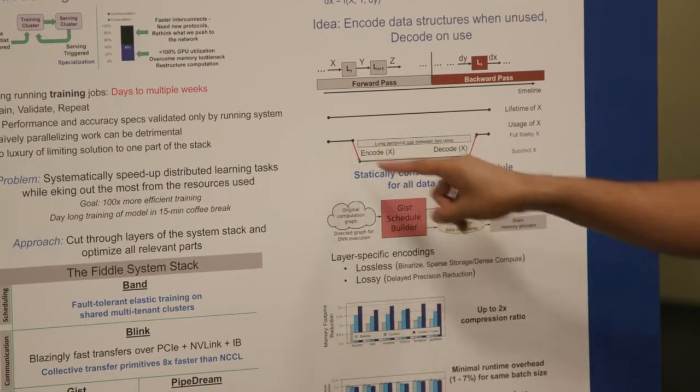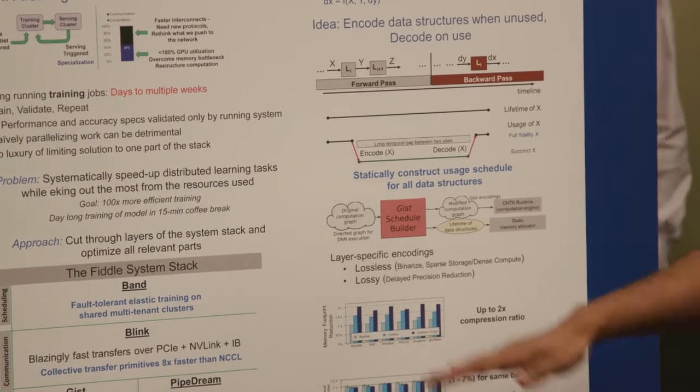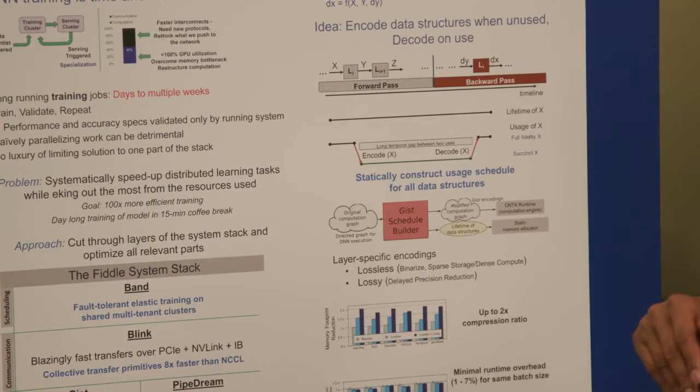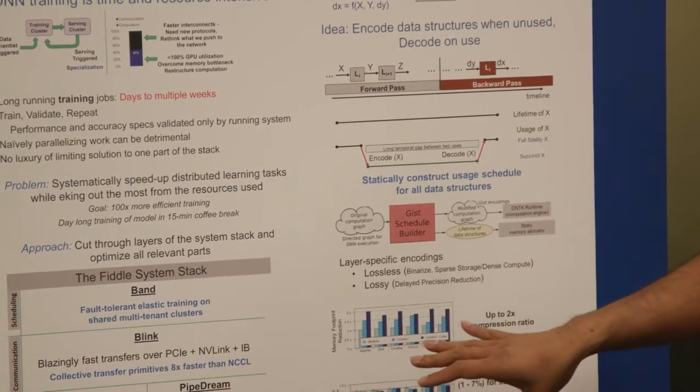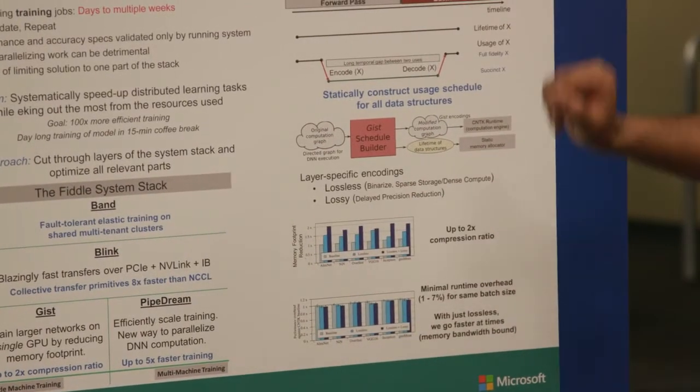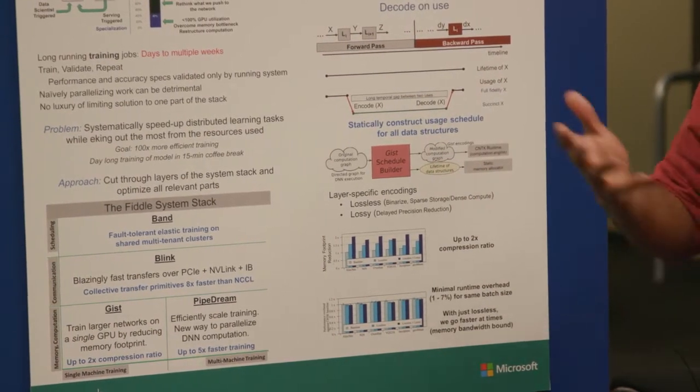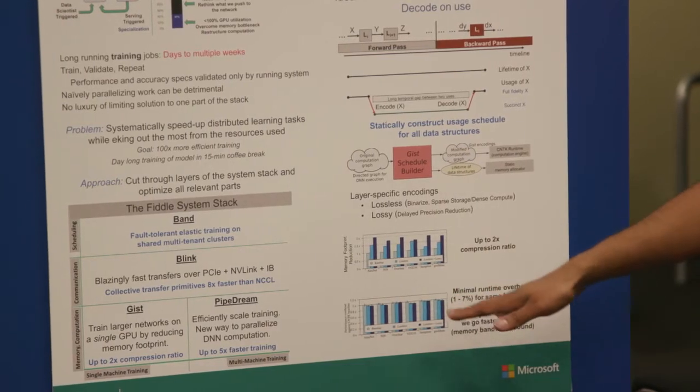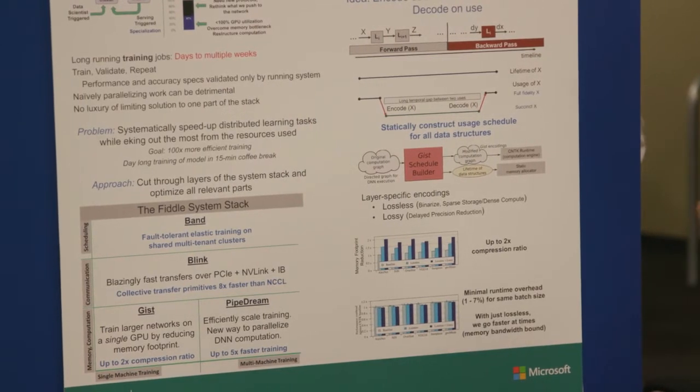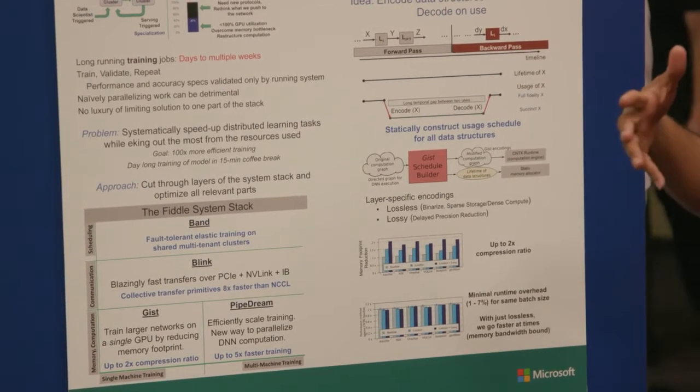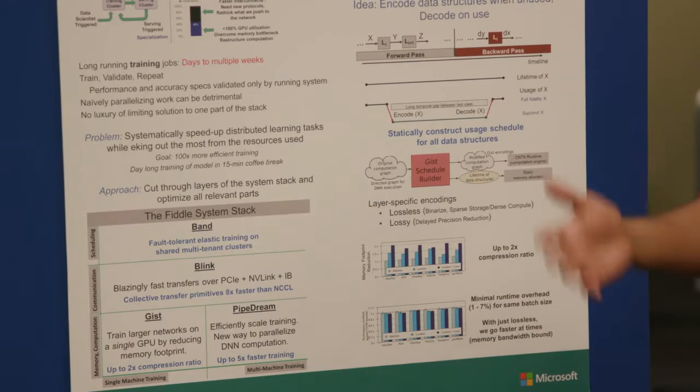I was hand-waving here when I talked about encode and decode functions. But specifically, we have a bunch of techniques, both lossless and lossy techniques, that are used for these encode and decode functions. The higher order bit here is using GIST. For these networks, we can get up to a 2x compression ratio. Encode, decode, of course, is not free. For these different networks, there's a minimal overhead of 1 to 7 percent that we pay for the same mini-batch size. But the beauty of GIST is we can enable larger mini-batch sizes to be loaded. And with larger mini-batch sizes, we'll have faster training.